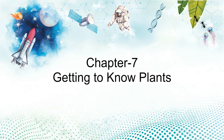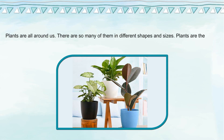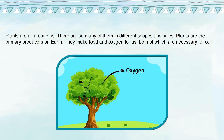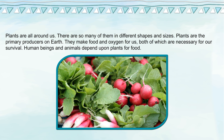Chapter 7: Getting to Know Plants. Plants are all around us. There are so many of them in different shapes and sizes. Plants are the primary producers on earth. They make food and oxygen for us, both of which are necessary for our survival. Human beings and animals depend upon plants for food.